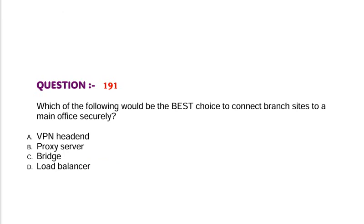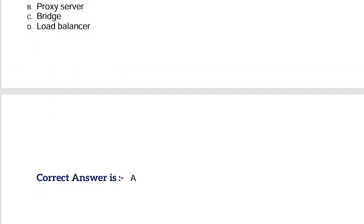Question: Which of the following would be the best choice to connect branch sites to a main office securely? Option A, VPN headend. Option B, proxy server. Option C, bridge. Option D, load balancer. Correct answer is Option A.